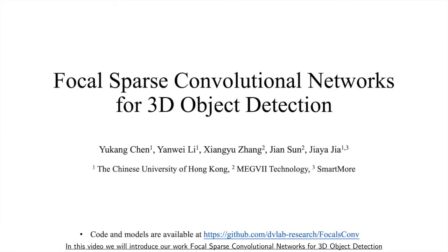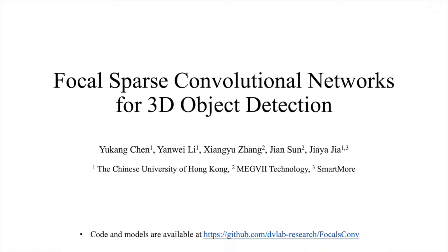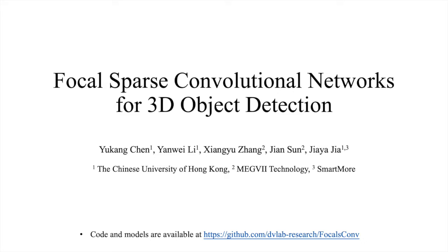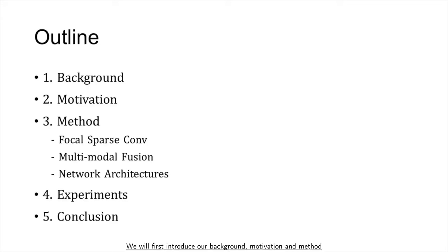In this video we will introduce our work: Focal Sparse Convolutional Networks for 3D Object Detection. Code and models of this work have been released at the GitHub link. We will first introduce our background, motivation, and method, then present our experiments and conclusion.